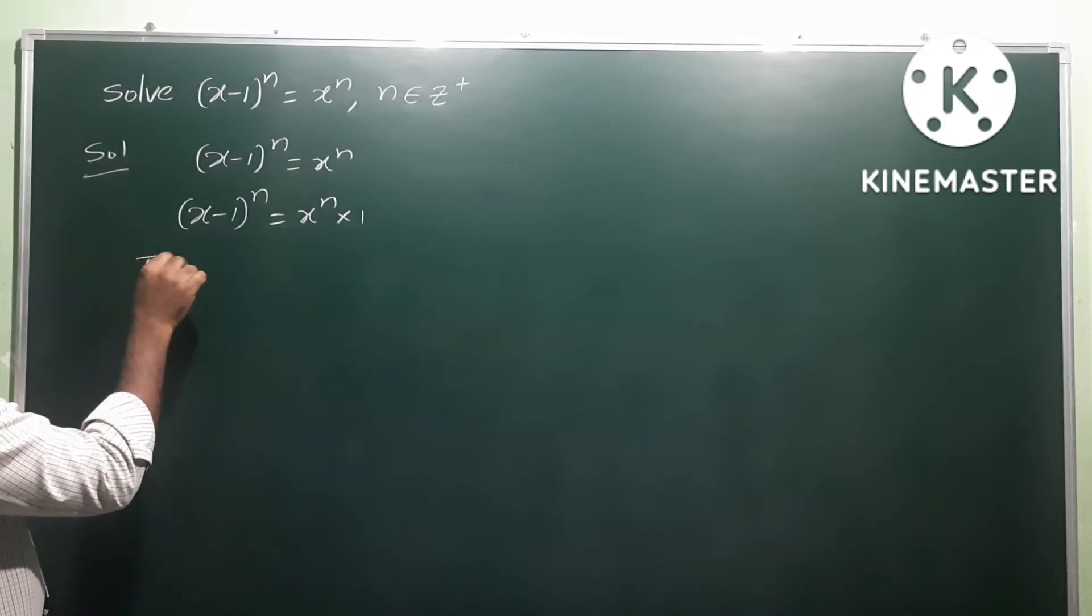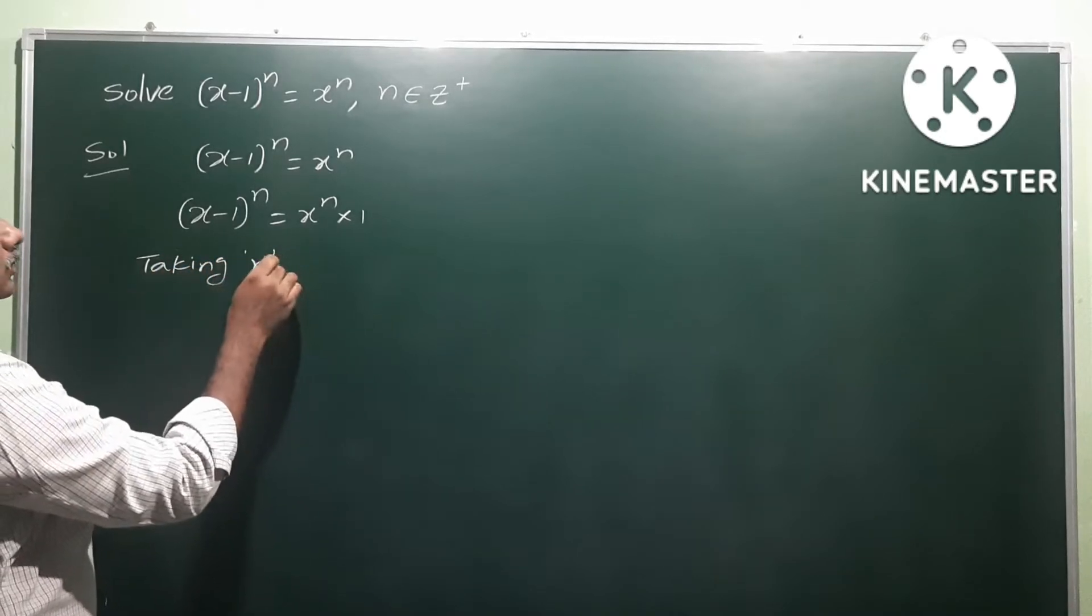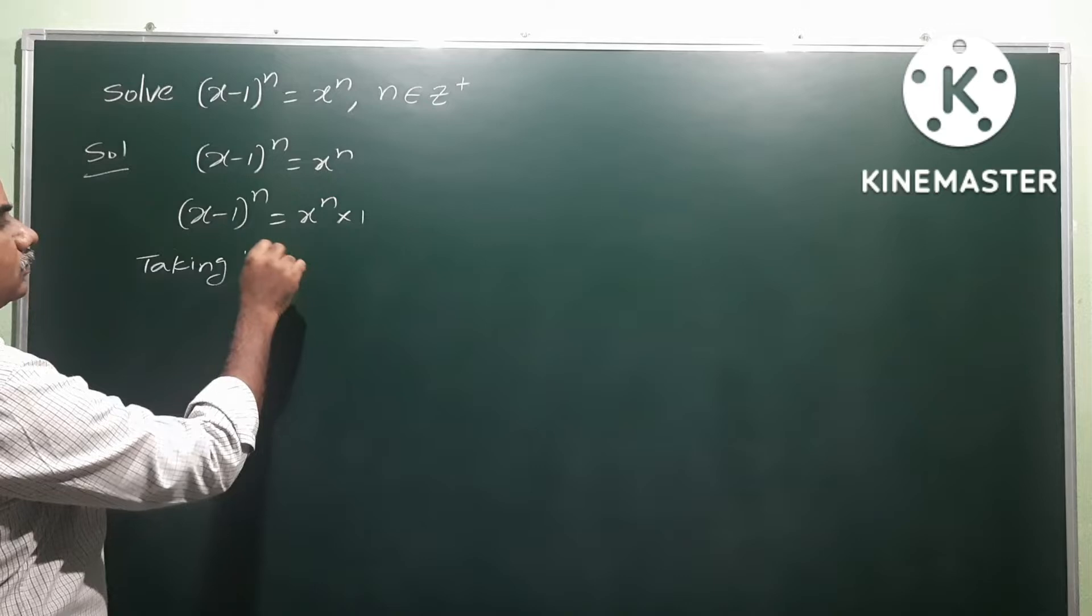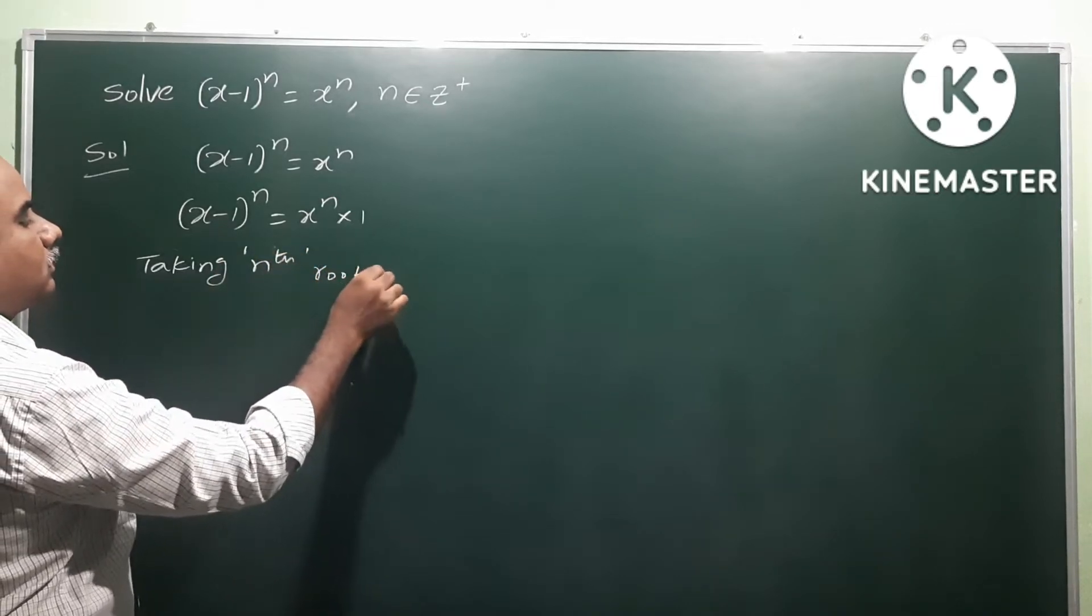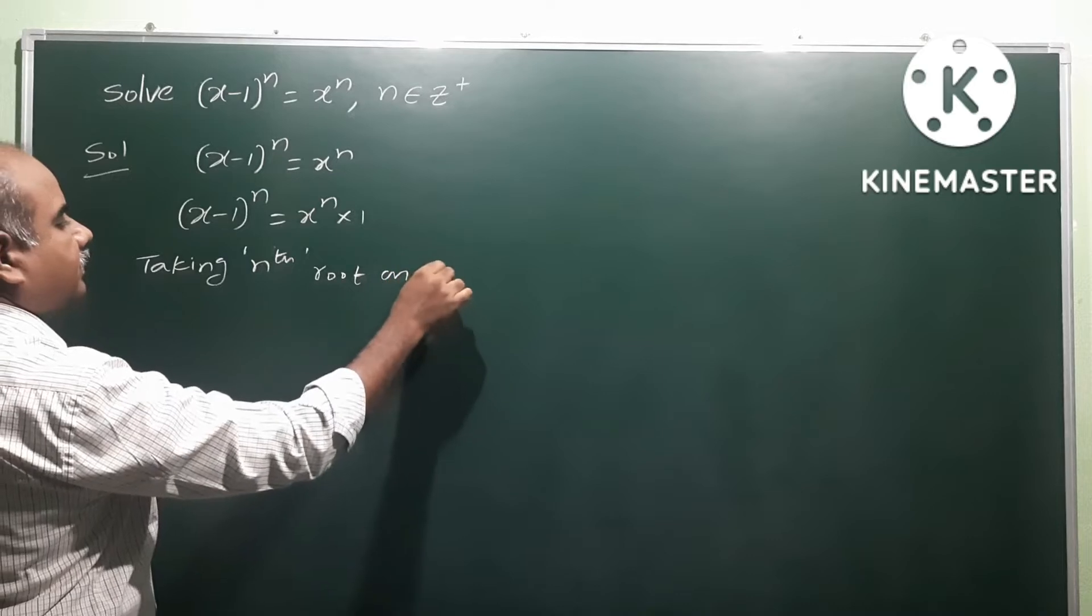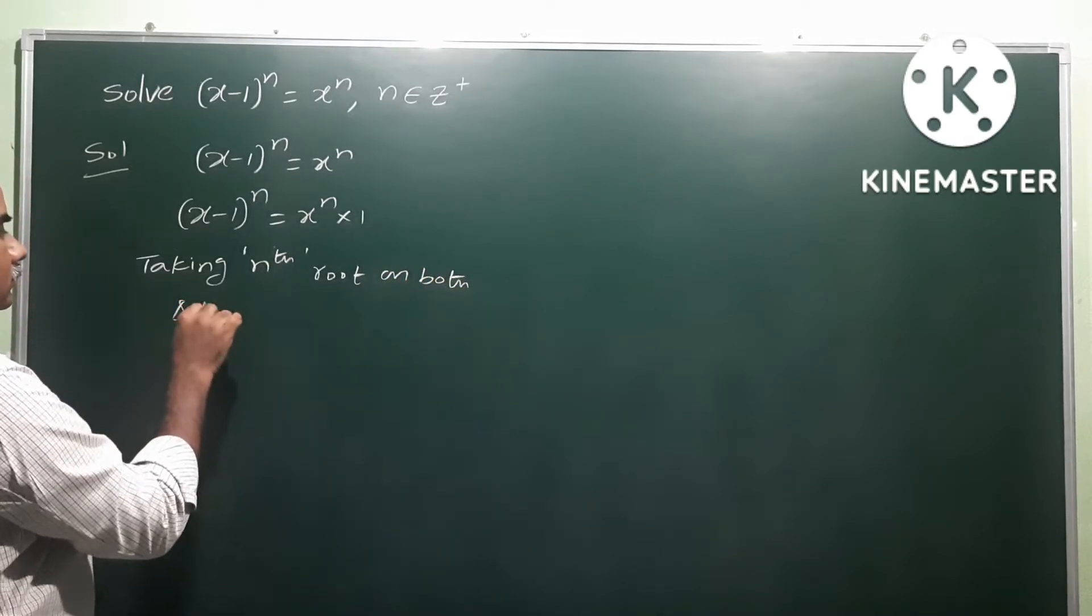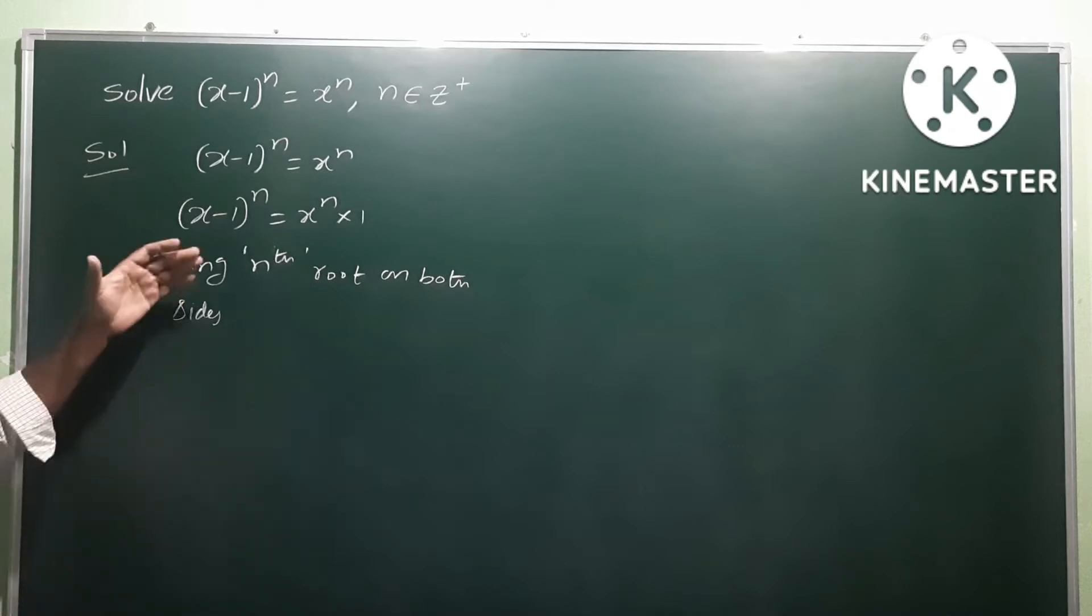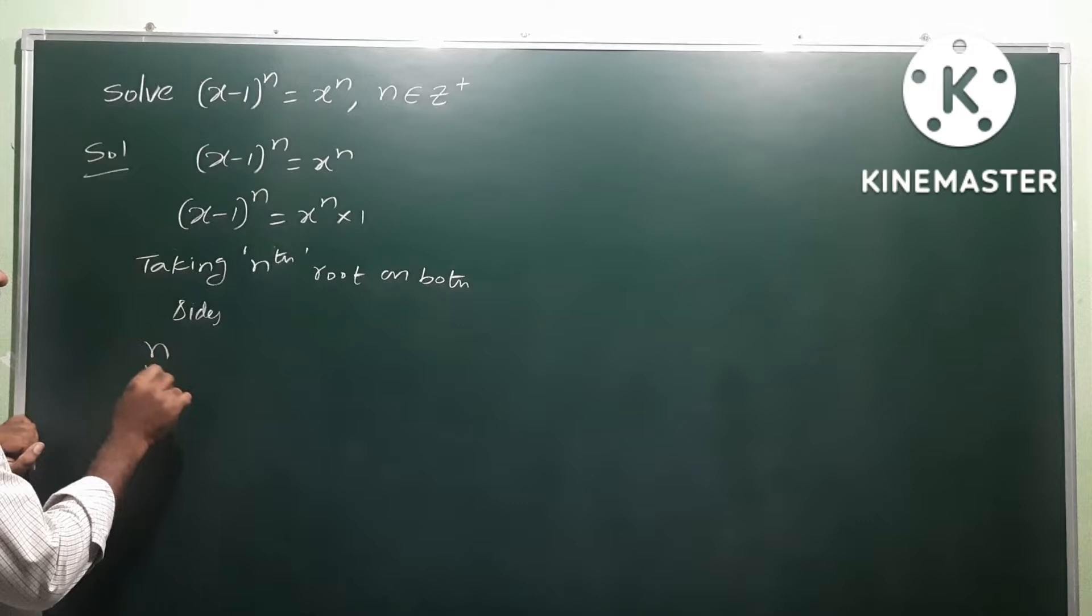Taking nth root on both sides, we apply the nth root to both sides. So nth root of (x-1)^n equals nth root of x^n times nth root of 1.